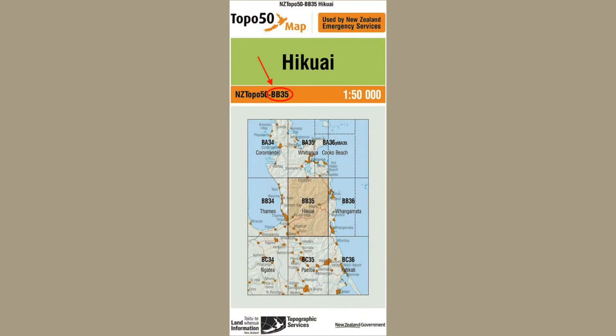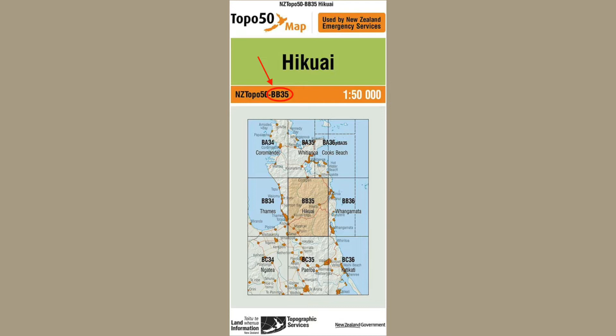This is then placed at the end of the easting to give us a six-figure grid reference of 393795. Finally, each map has a unique code so it can be distinguished. This code is placed before the grid reference to identify which map is being used.